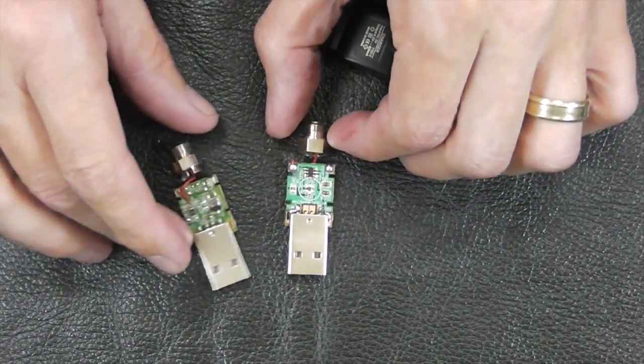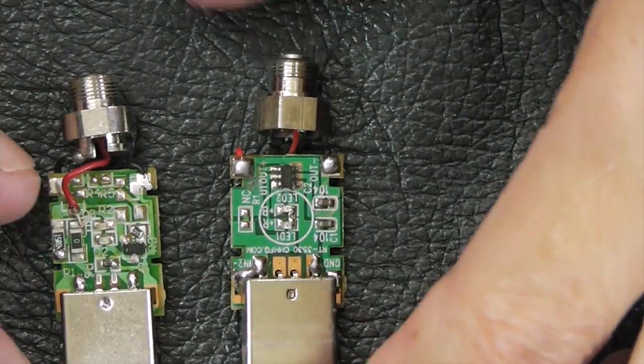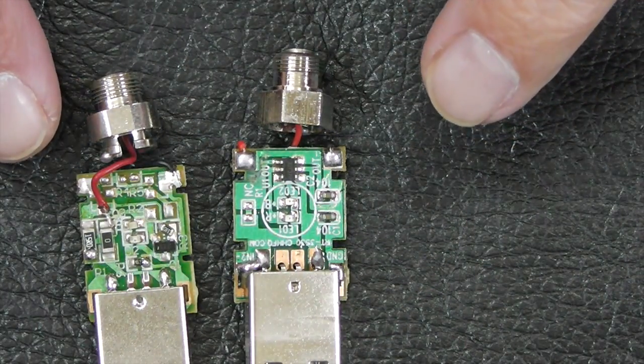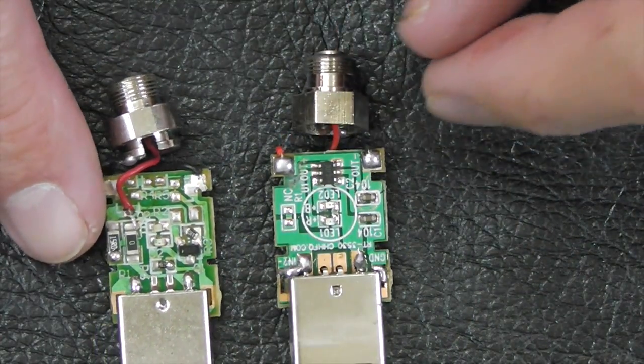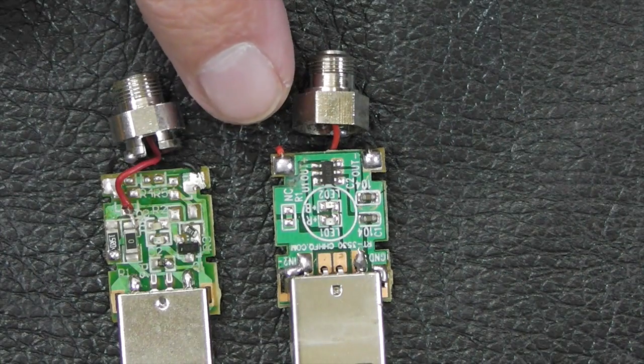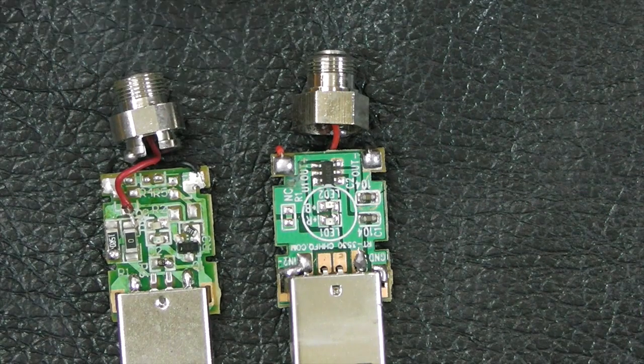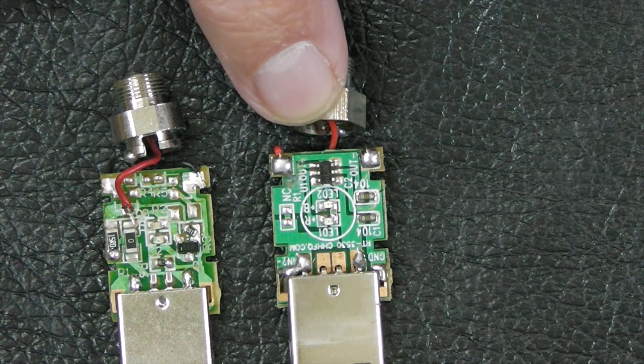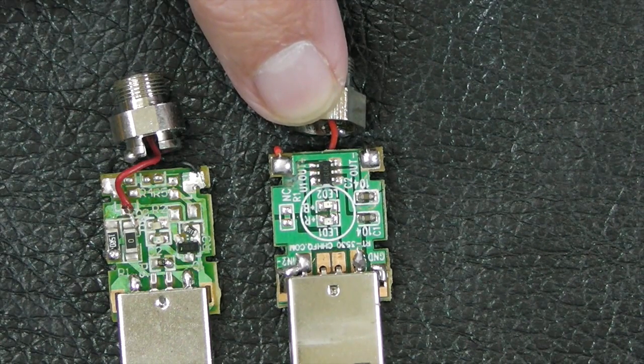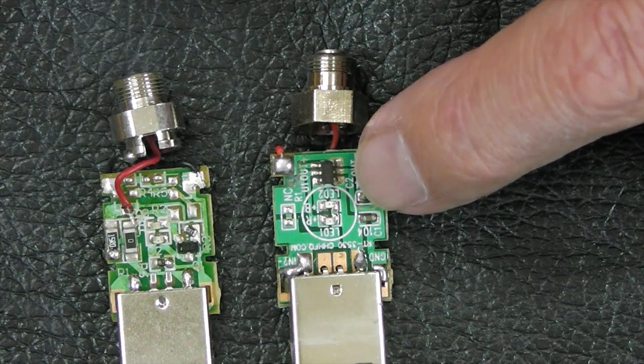Straight away you can see a major difference in terms of components and bits and pieces. There is a huge difference not only in what I would call build quality. This definitely looks like a higher quality construction than this one. There's an extra chip in that circuit. I would imagine this chip down here is the one that's going to be doing the regulation.